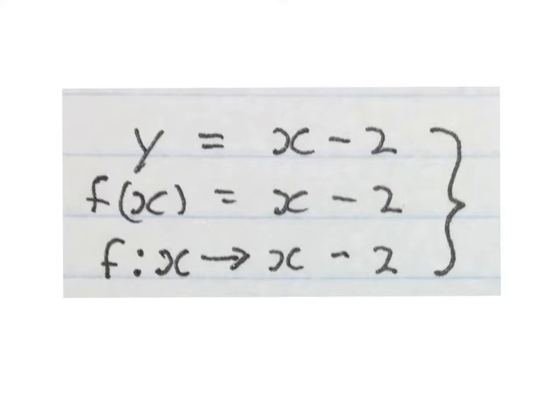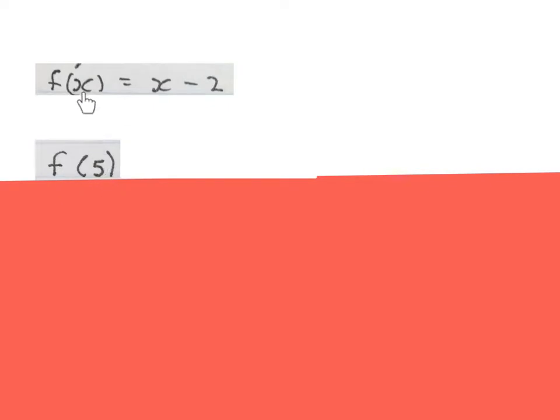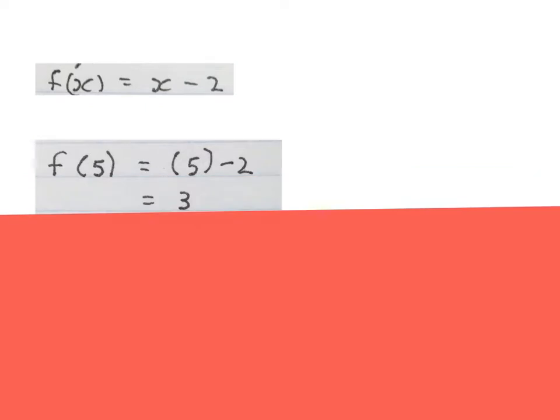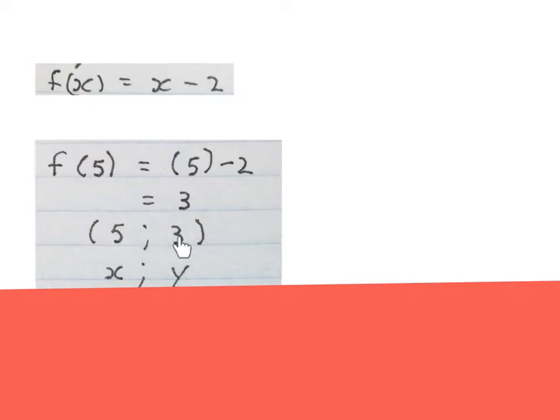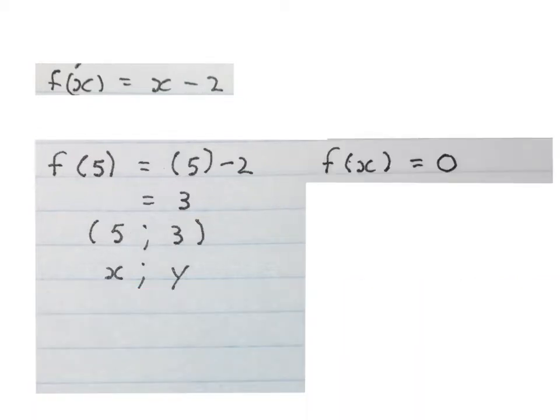The first question says: determine F of 5. This means that you replace the X with 5, so that X becomes a 5. You rewrite this replacing the X with 5, then you simplify it and get 3. So when you replace the X with 5 you'll get a Y value of 3. In this case it'll be a coordinate: X is 5 and Y is 3.